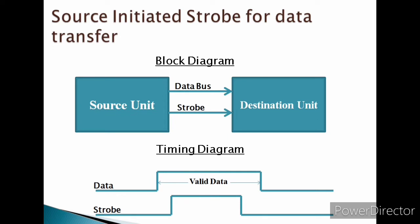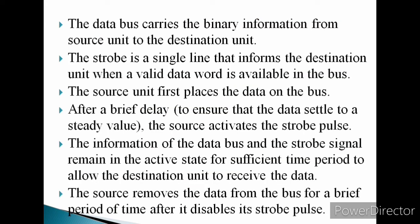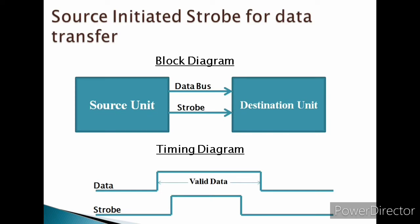The source unit first places the data on the bus. After a brief delay, the source activates the strobe pulse. The information on the data bus and the strobe signal remain in an active state for a sufficient time period to allow the destination unit to receive the data. The source then removes the data from the bus for a brief period of time after it disables its strobe pulse.